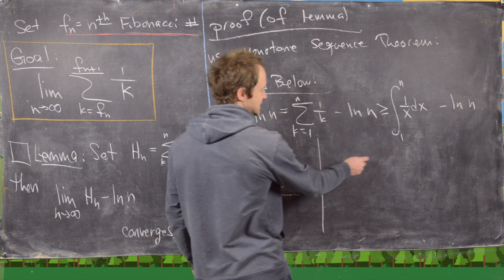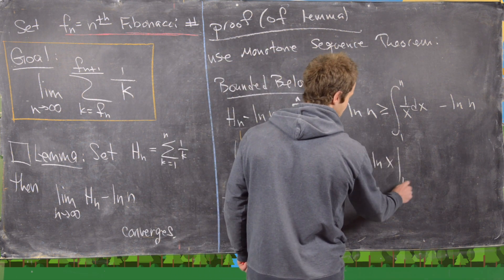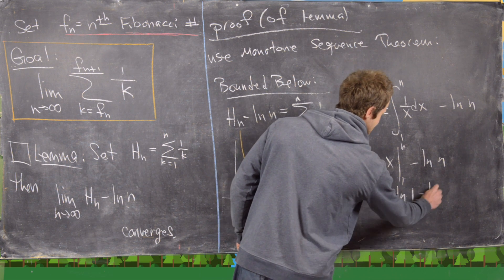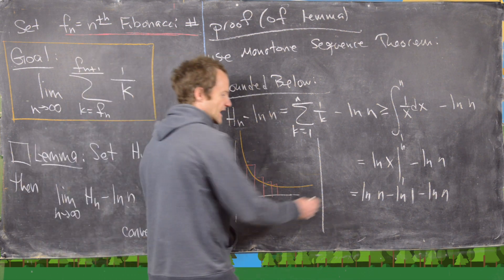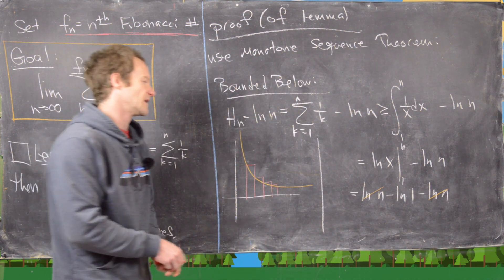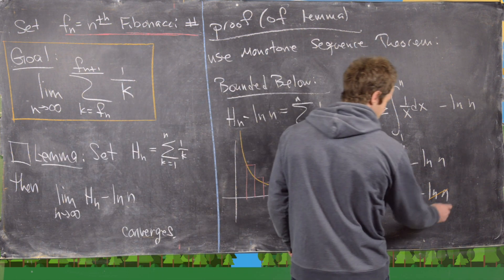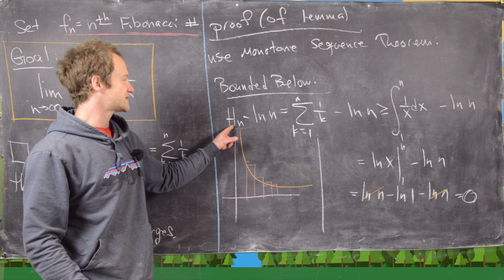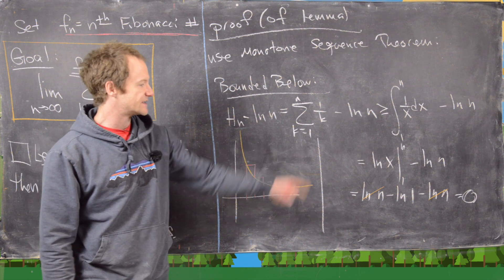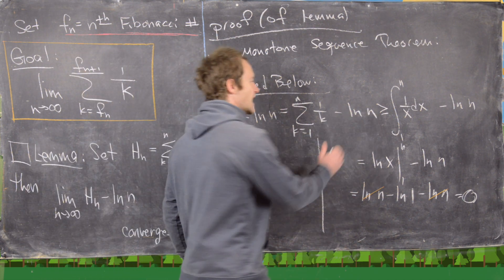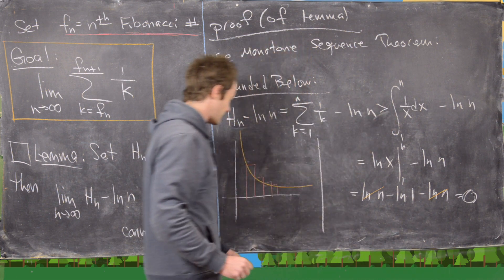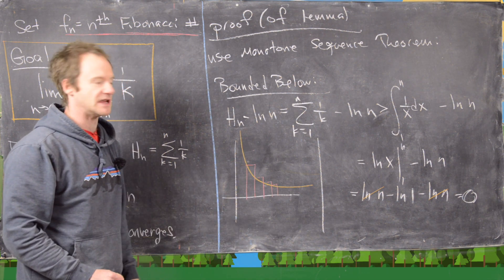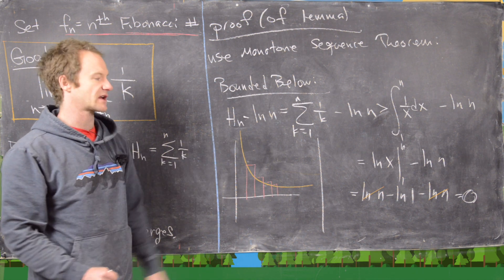We can use the fundamental theorem of calculus to calculate this. That gives us the natural log of x evaluated between 1 and n, minus the natural log of n — which is the natural log of n minus the natural log of 1 minus the natural log of n. The natural log of n cancels, and the natural log of 1 is 0, so we get 0. So what we've shown is that this harmonic number minus the natural log of n is always bigger than or equal to 0 — in fact, strictly greater than 0.